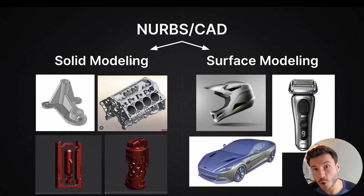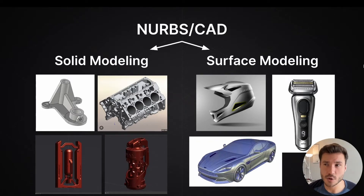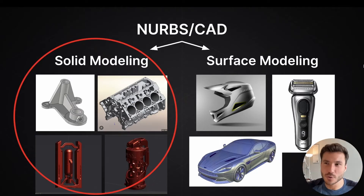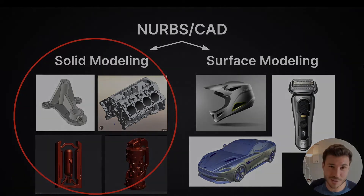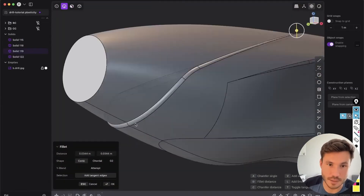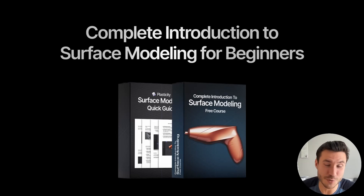Now we know a bit more about NURBS modeling. In the next module, we'll break down solid modeling and surface modeling so you understand the differences and can decide which you want to learn. See you in the next module. If you found this lesson helpful and want to learn more about surface modeling, check out my free course with over 40 modules explaining everything about surface modeling for beginners. Sign up today with the first link in the description box. Have a nice day, bye!